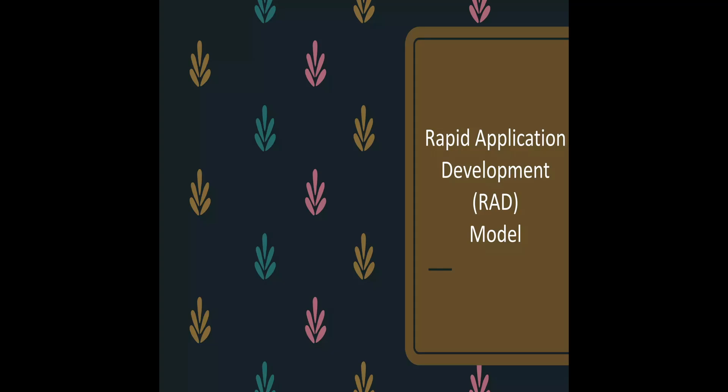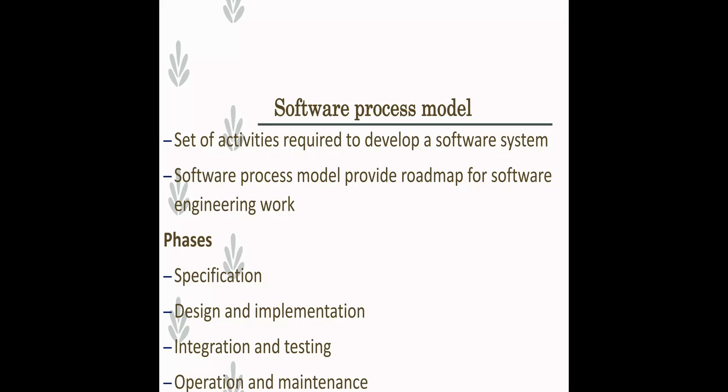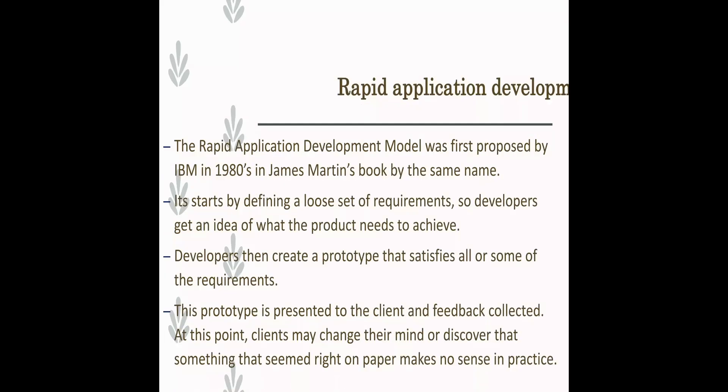The next model is the RAD model — Rapid Application Development. A software process model is a set of activities required to develop a software system. Software process models provide a road map for software engineering work. The phases followed in a software process model are: specification, design and implementation, integration and testing, and operations and maintenance. The RAD model in SDLC was first proposed by IBM in 1980 by James Martin.